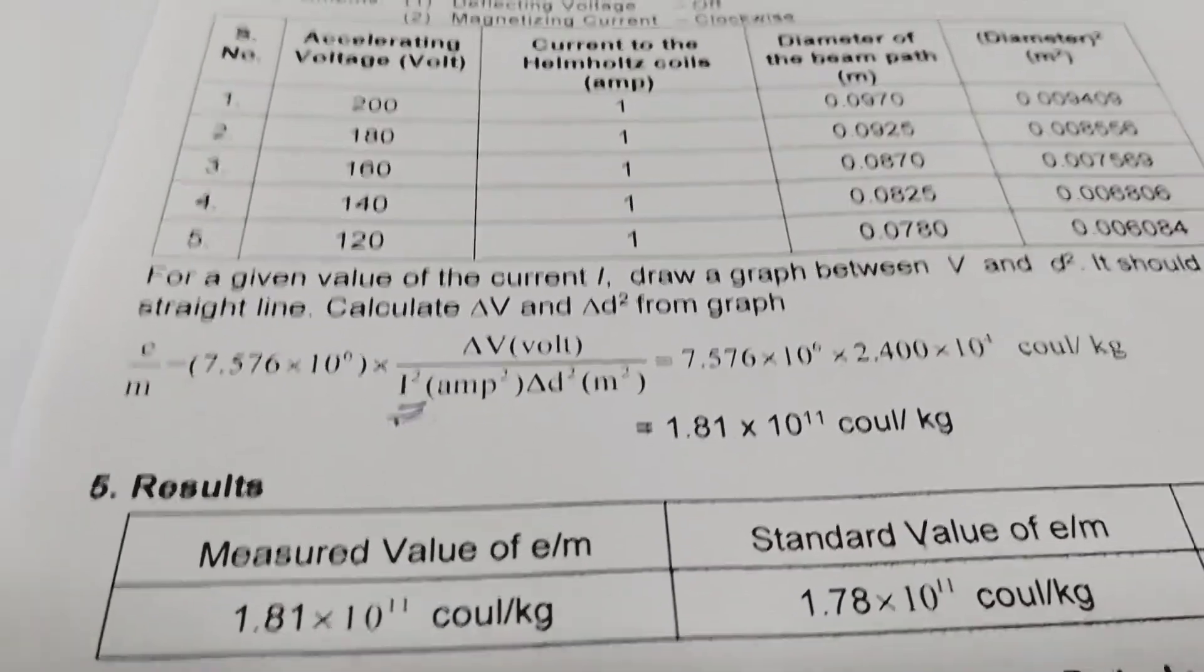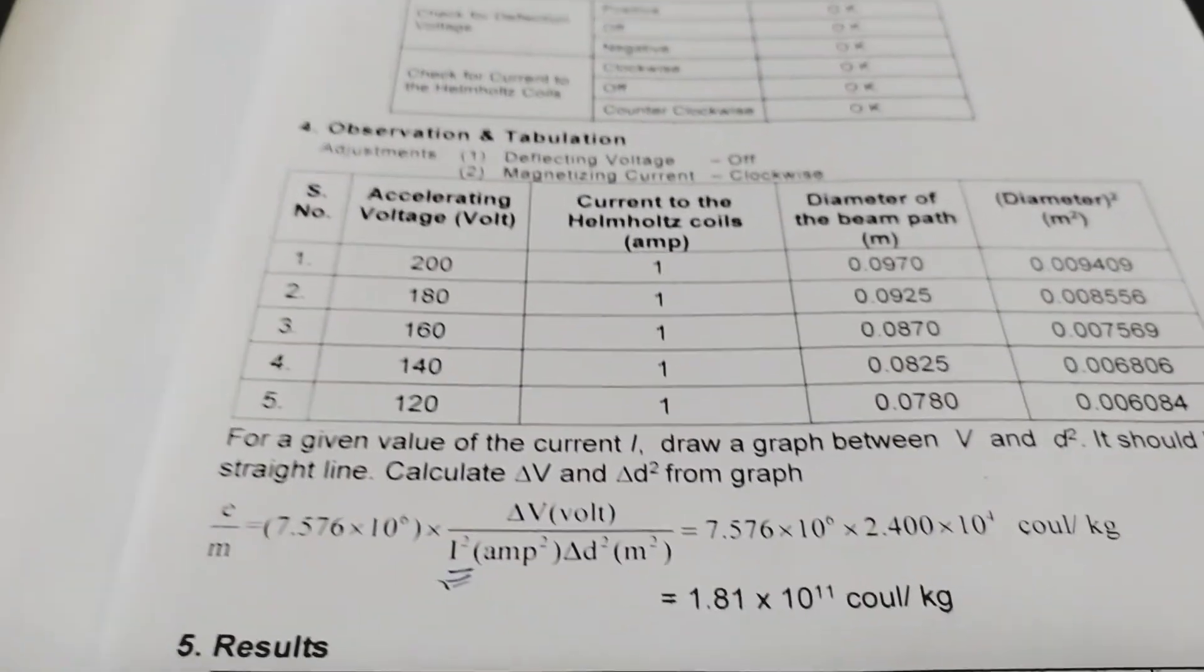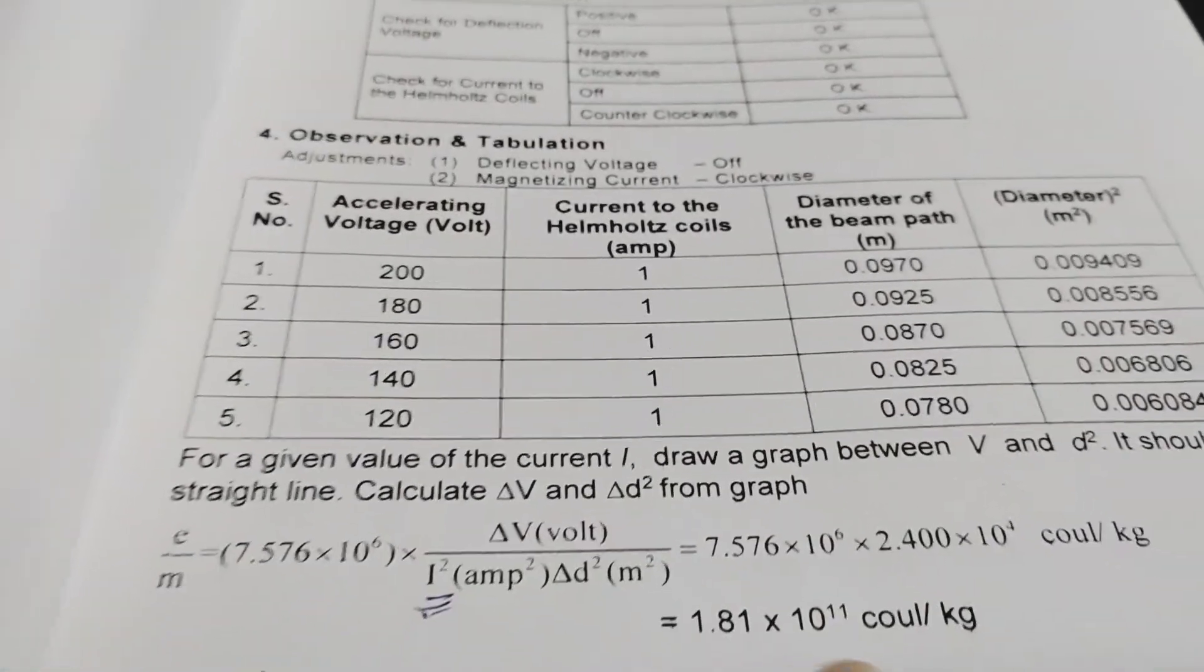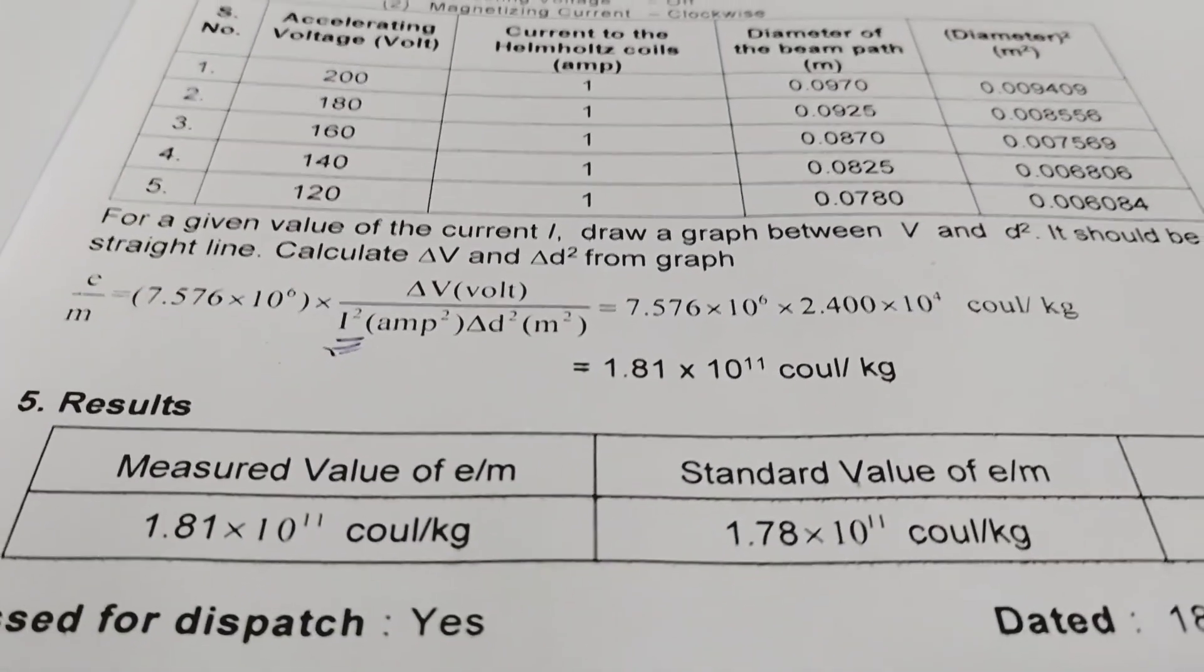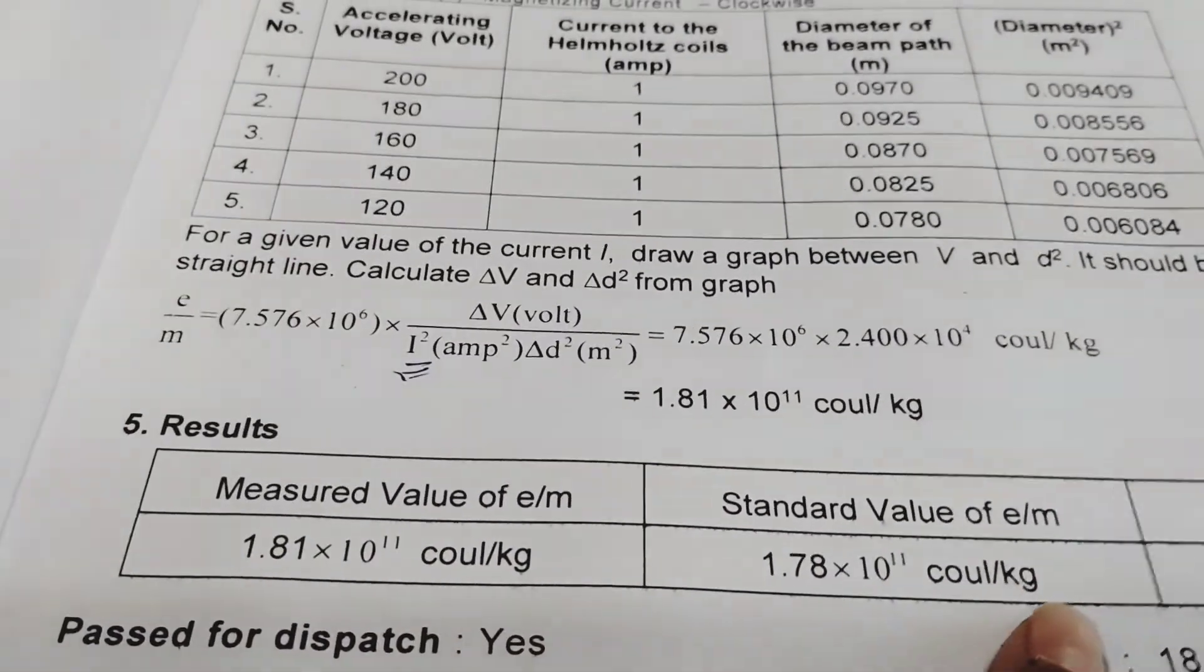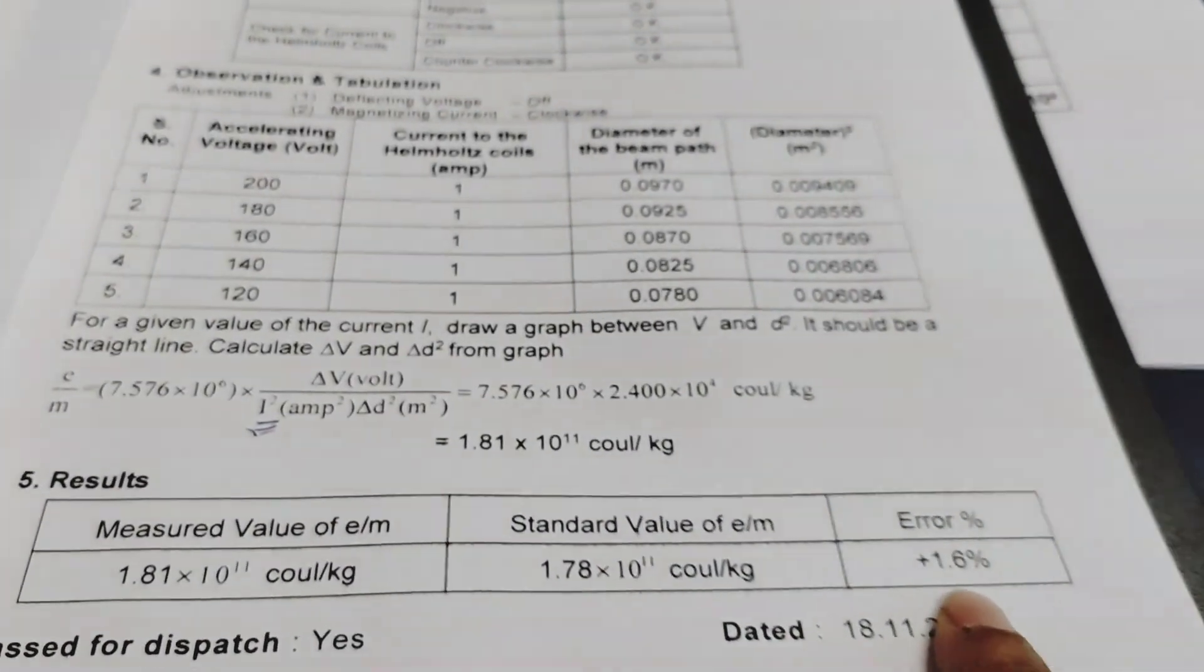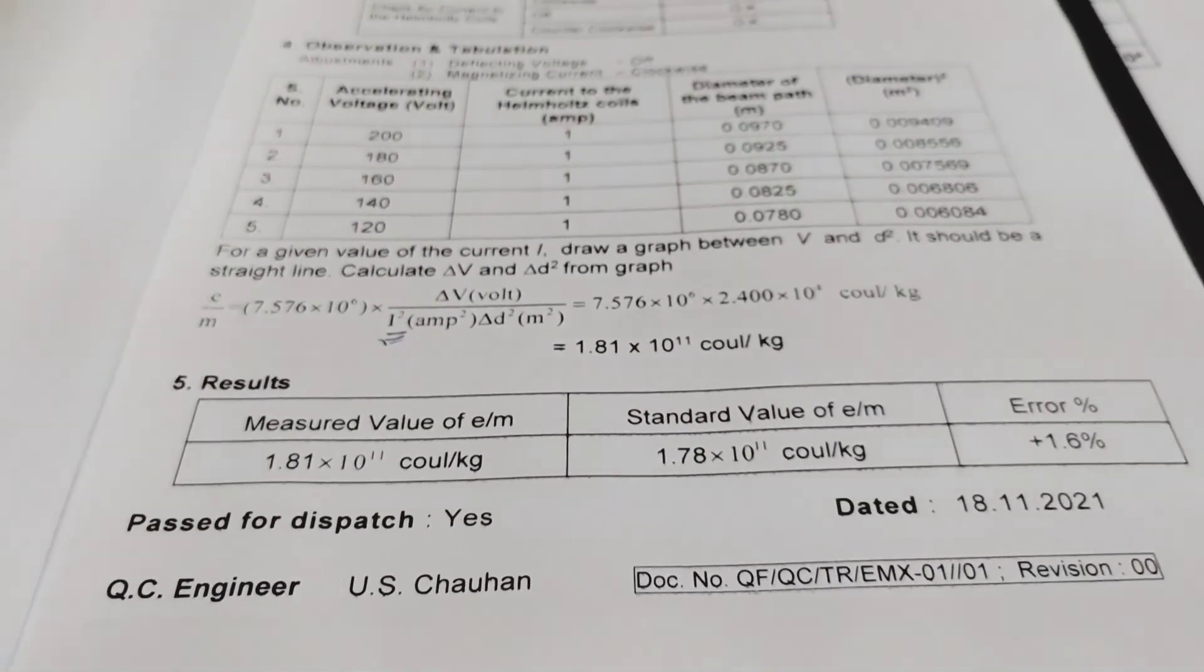Here you can see that this is the working formula of e by m. E by m equals to 8V by D square, B square. So we are putting the values and we are getting 1.81 into 10 to the power 11 coulomb per kg. So actual value is, standard value is 1.78 into 10 to the power 11 coulomb per kg. So we have error. The error percentage is 1.6%. So that's all for today's experiment. Thank you.